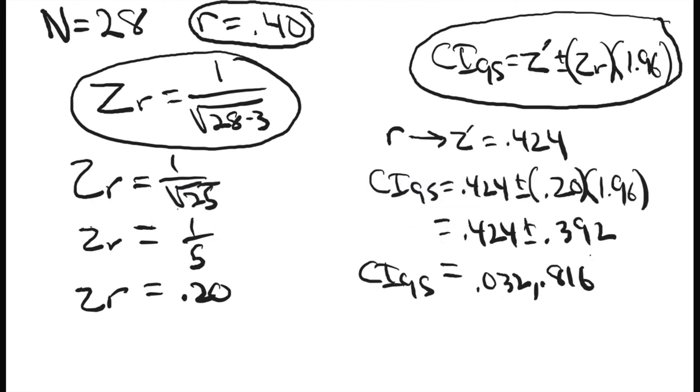When I use that applet to convert these z prime scores back into correlation coefficients, I get a value of 0.673 for this one, and this one actually stays the same at 0.032. So now these are correlation coefficients.